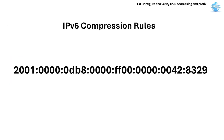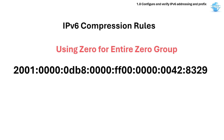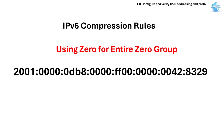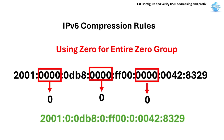IPv6 also has compression rules to make addresses easier to read. In an IPv6 address, a group can consist of all zeros. In such a case, we do not need to write all the zeros — we can just write one zero, which represents four zeros in a group.